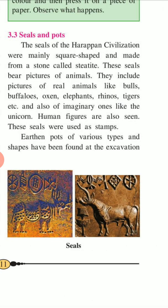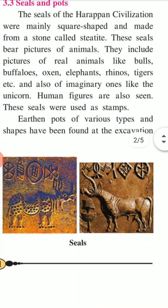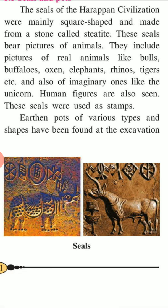Let's learn about seals and pots. The seals of the Harappan civilization were mainly square-shaped and made from a stone called steatite. These seals bear pictures of animals — they include pictures of real animals like bulls, buffaloes, bison, elephants, rhinos, and tigers, and also imaginary ones like the unicorn. Human figures are also seen. These seals were used as stamps. Earthen pots of various types and shapes have been found at the excavation sites.